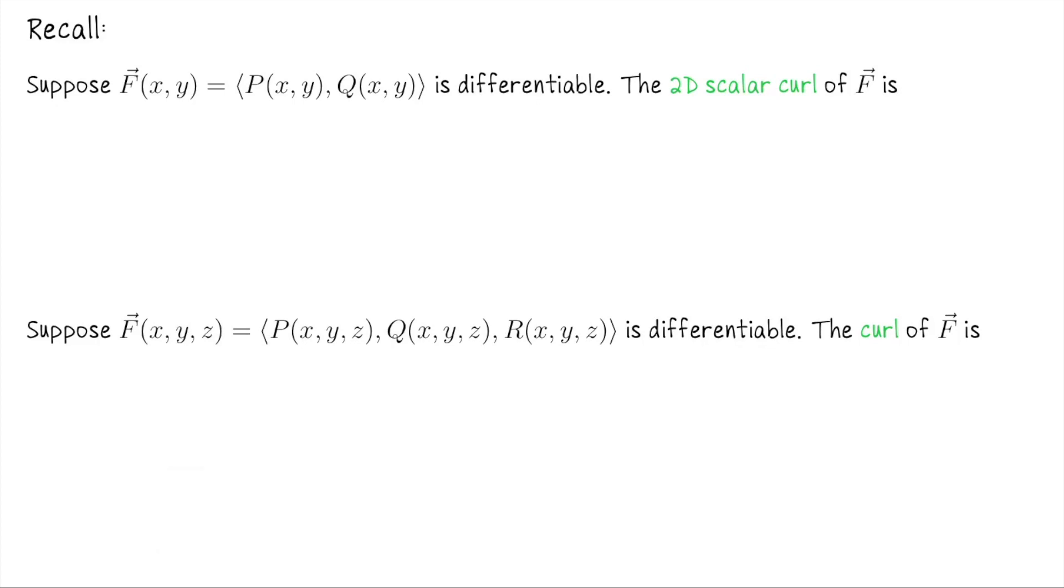Suppose we have a vector field in R2 which has nice differentiable coordinate functions. Then what I typically call the 2D scalar curl of this vector field is the quantity Q_x minus P_y. So it's d/dx of the second component minus d/dy of the first component. I use this notation for that but it's not universal. The reason why I do this is that it feels kind of like the curl.